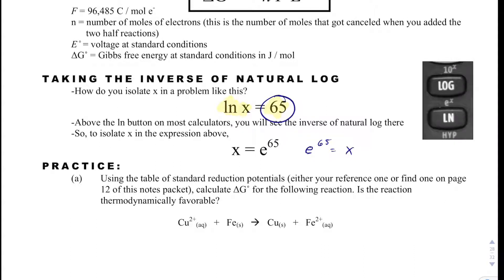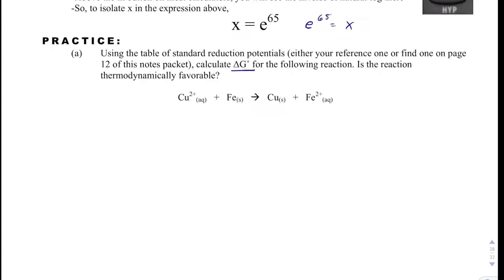What I want to do is calculate delta G, and all I'm given is this information. So what I do is I go through and I say Cu plus 2 is reduced.